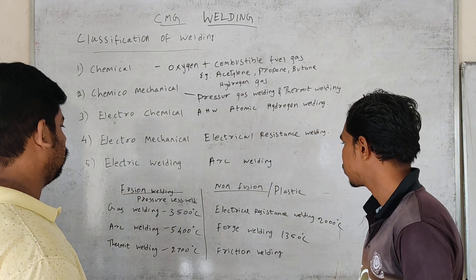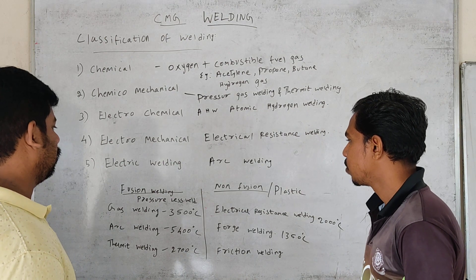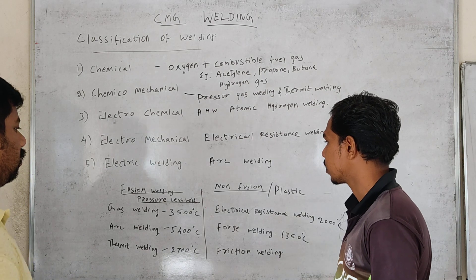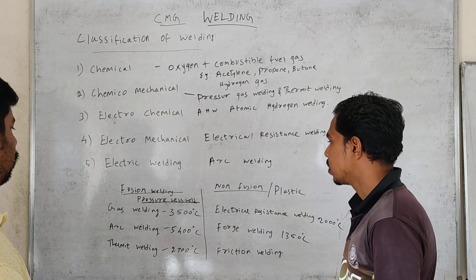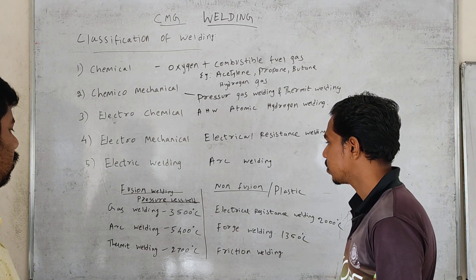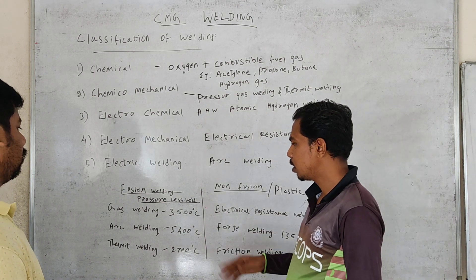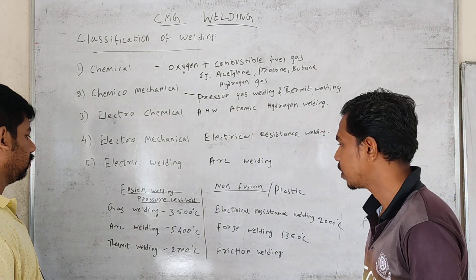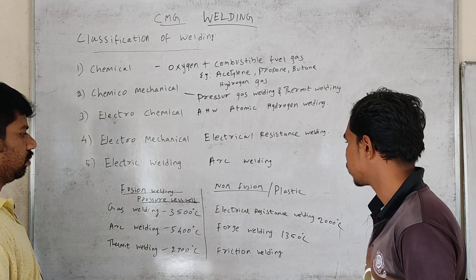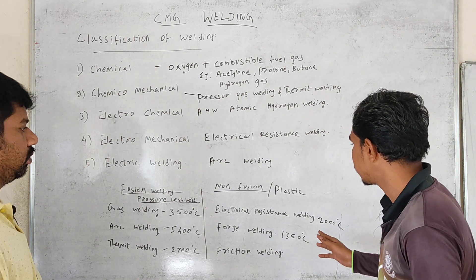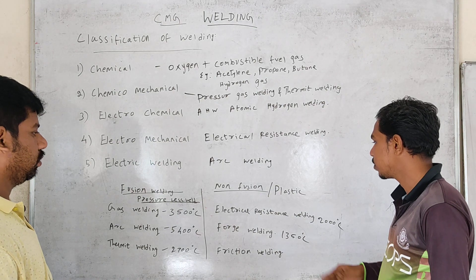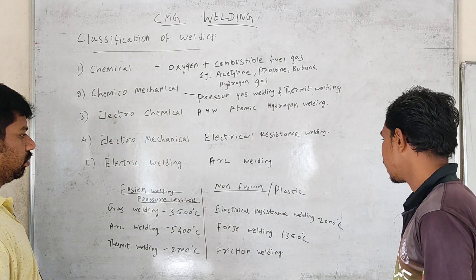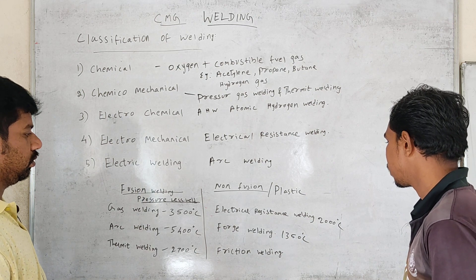We use fusion welding and non-fusion welding. In fusion welding, we use filler material, and the metal melts and solidifies — this applies to gas welding, arc welding, and thermite welding. In non-fusion welding, the metal is heated to a plastic state and pressure is applied — this includes electrical resistance welding, forge welding, and pressure welding.